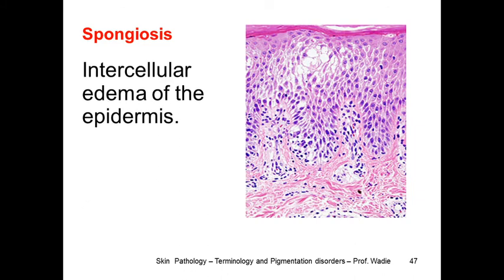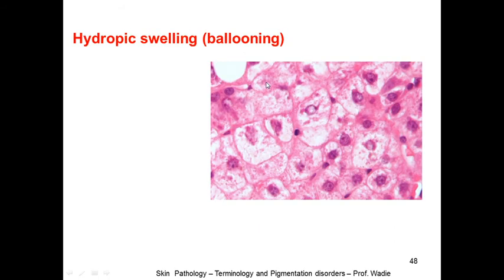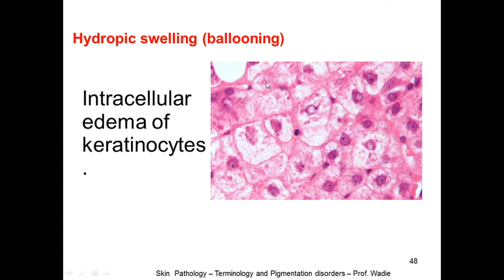Spongiosis refers to intercellular edema of the epidermis — when there is edema between the cells, it looks spongy. Hydropic swelling or ballooning refers to intracellular edema of keratinocytes — you find edema within the cells themselves.